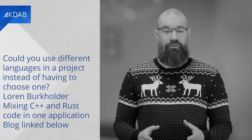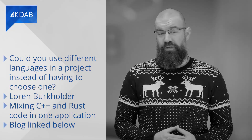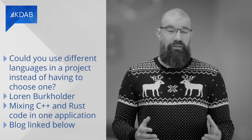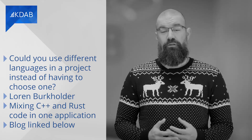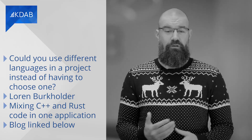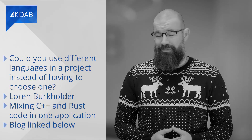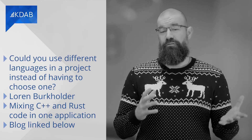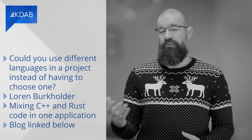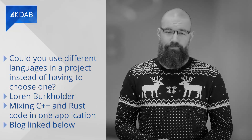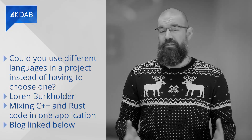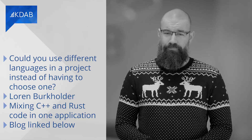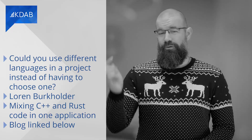I bet you have wondered at some point whether you could use different languages in one project, instead of having to choose one for the whole project. Our colleague Laurent explored ways of mixing C++ and Rust code in one application. In his blog post, he describes his thought process and how he resolved the issue — spoiler: he's using language D as glue. The most obvious reason that compiled languages can't just interact is ABI/syntax incompatibility. C++ compilers don't understand Rust and Rust compilers don't understand C++, so neither can tell what functions or classes the other exposes. The biggest challenges are name mangling, data layout, and standard libraries. If you want to know how Laurent approached these, you can read the blog linked below.